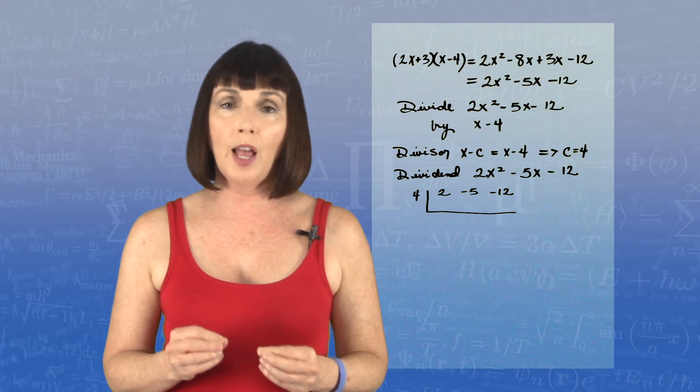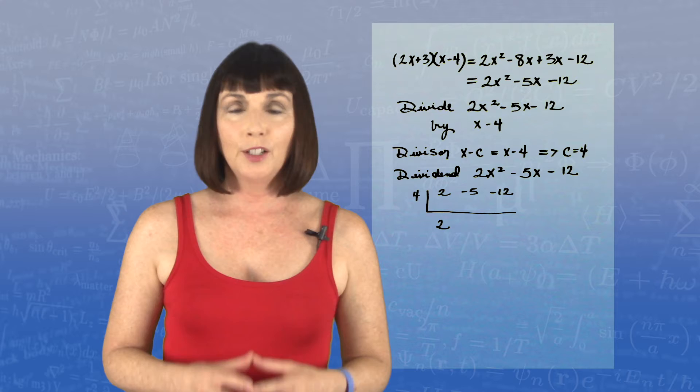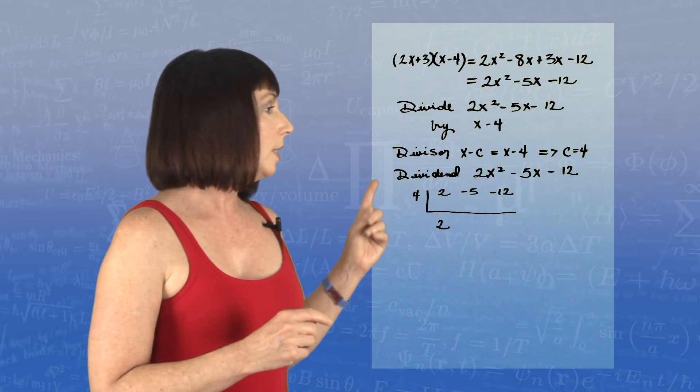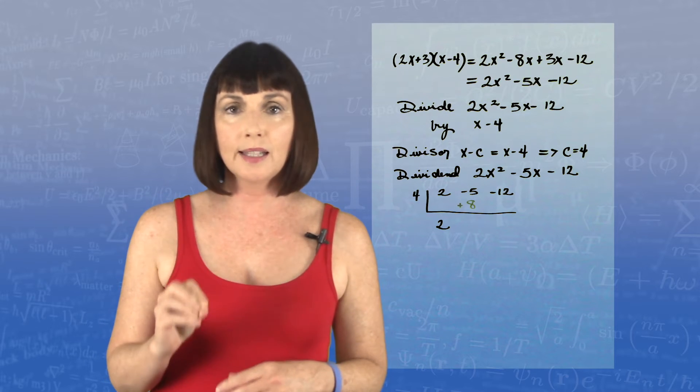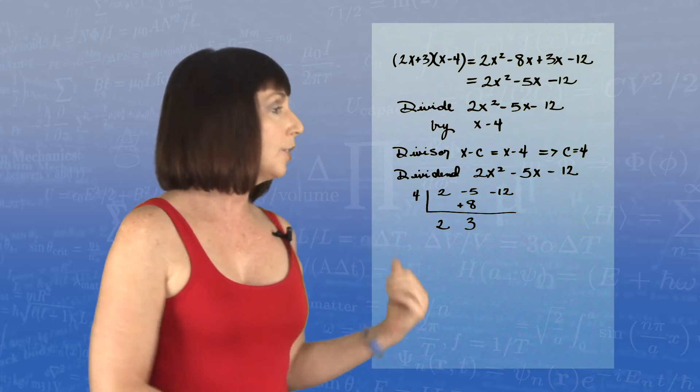Now, you're going to bring the first value in the first row down to the bottom. Then you multiply that by c. 2 times 4 is 8. You write that in the second place on the second row, and then you add. Negative 5 plus 8 is 3.